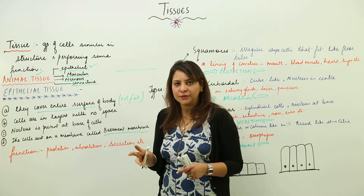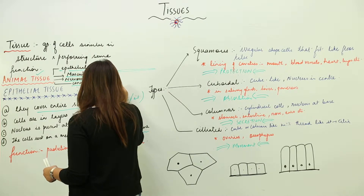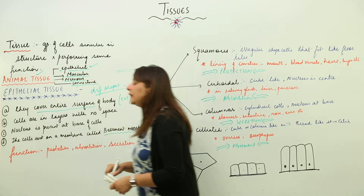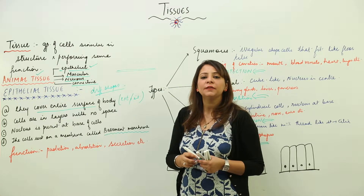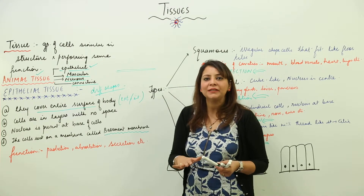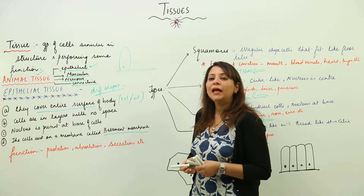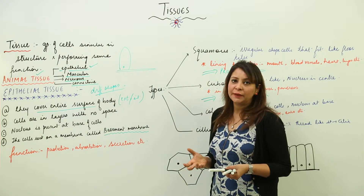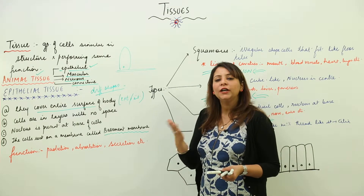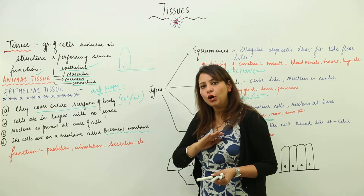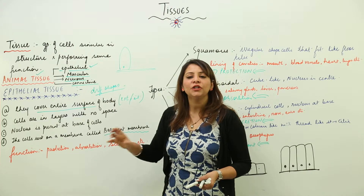The cells of epithelial tissue possess different shapes depending upon their type. They always contain a nucleus, which is maximum times present at the base — meaning towards the downside. There may be little or no space between cells, and the tissue forms a lining internally or externally all over the body.